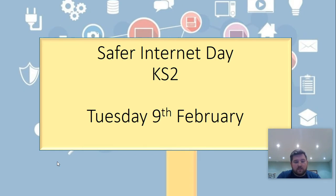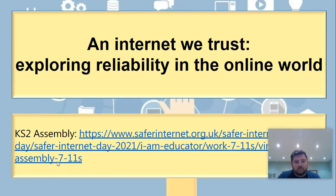The work you're going to see is the same work, pretty much, as the children in school are doing across all of Key Stage 2 — that's Year 3, 4, 5, and 6. One of the things we're going to question today is: an internet we trust — exploring reliability in the online world. Can we trust the internet, can we trust what is on there, and how do we consider whether something is reliable when we look at the online world?